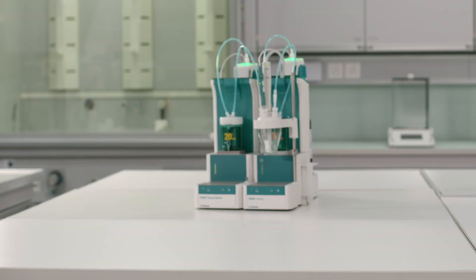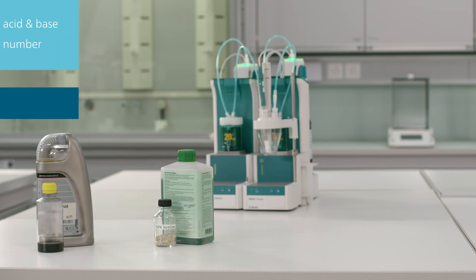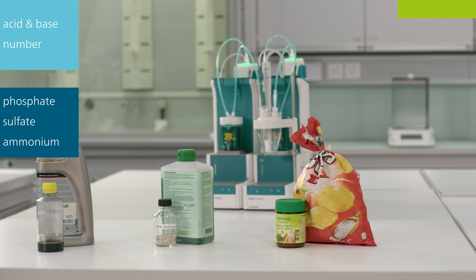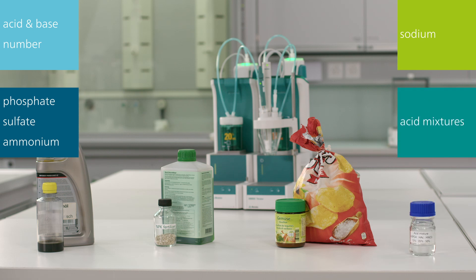Typically, thermometric titration is used to determine the acid number or base number, phosphate, sulfate or ammonium content in fertilizer, sodium content in various foodstuffs, or for analyzing acid mixtures. All these titrations can be performed with the same sensor.